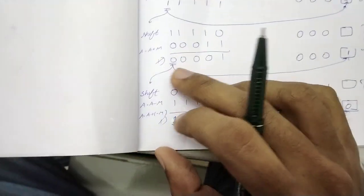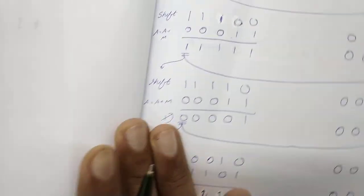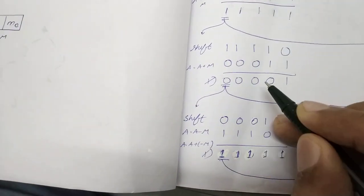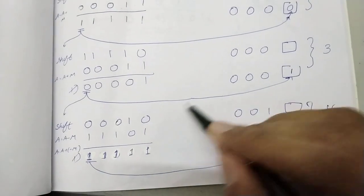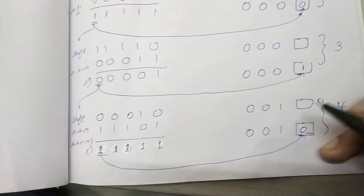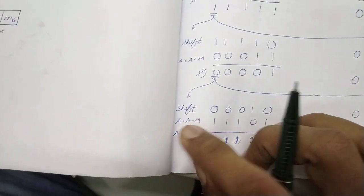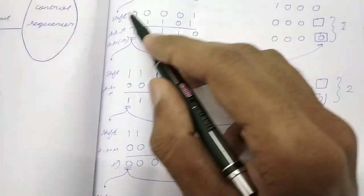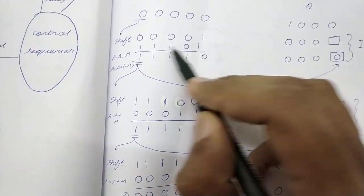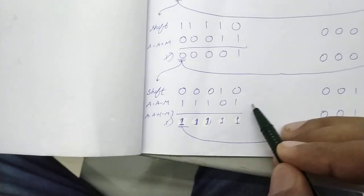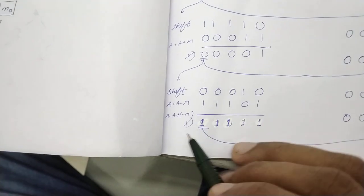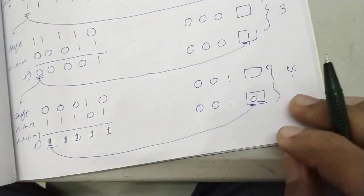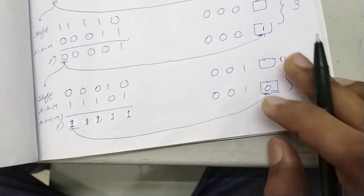For the fourth iteration, we check the first bit — it is 0. So it is shift and A minus M. First we shift left: A becomes 00010 with a vacant space. Then we do the subtraction using 2's complement. Minus M was found earlier as 11101. Adding A and minus M gives 11111. The first bit is 1, so its complement is 0, which we write into the vacant LSB of Q. The fourth iteration is complete.